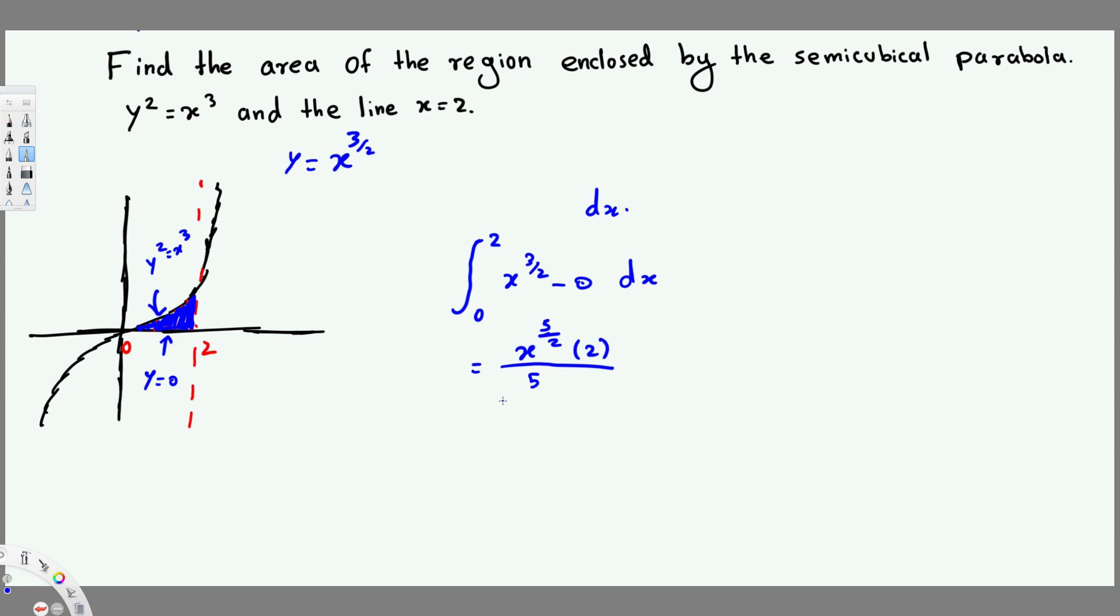Now this is going from 0 to 2, so let's plug the values. So we have 2 times 2^(5/2) divided by 5, and this one I can write as 2 times 2^(5/2), 1 over 2 that means root, right? We can write this as √(2^5) over 5.